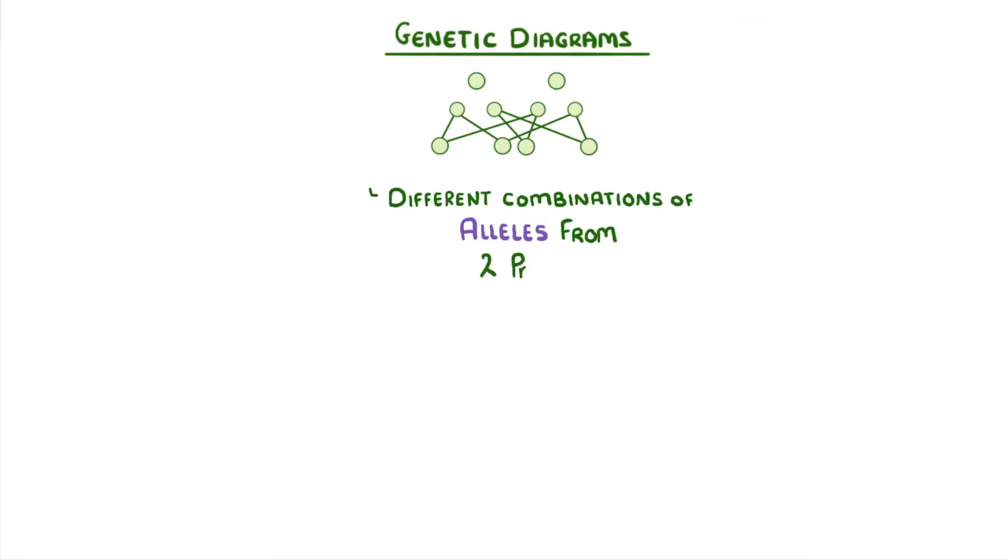In this video we're going to take a look at genetic diagrams which show us all the different combinations of alleles that we can get from two parents.